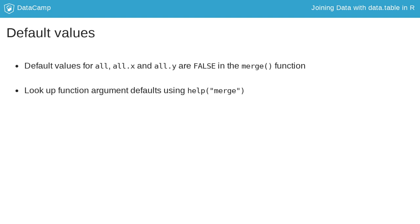Any arguments you don't specify in a function call in R take on their default values. For example, the arguments all, all.x and all.y for the merge function have a default value of false. You can look up the default values for any function's arguments by using the help function.